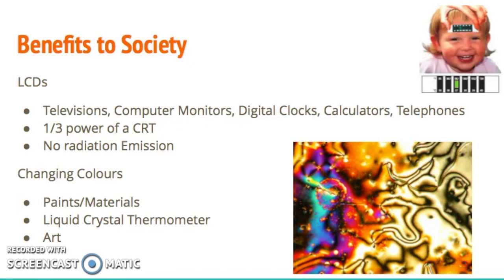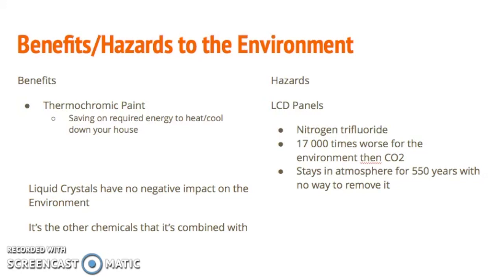There is also a huge artistic attraction, making art that changes color depending on temperature. This right here is a picture taken through a polarized optical microscope of liquid crystals. A benefit to the environment is paint that changes color depending on how cold or warm it is — if it is too cold, it turns a darker color to absorb more heat, and if it is too warm, it turns a lighter color to absorb less heat, saving energy on air conditioning and heating.